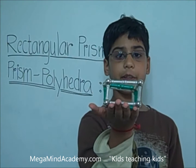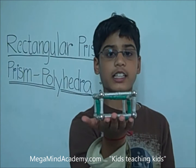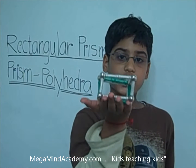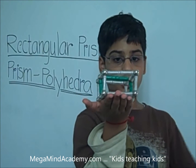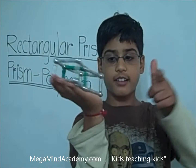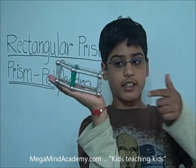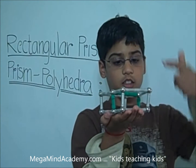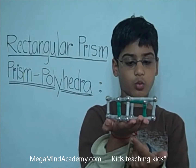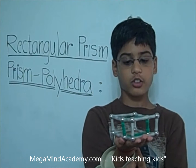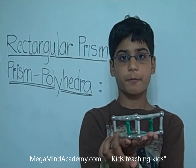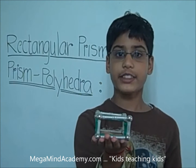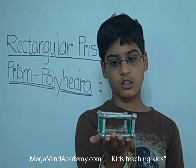Now let's see how many faces, edges, and vertices are on a rectangular prism. First, let's see how many faces there are. One on this end, one on this end, and four all around the sides — one, two, one on the bottom which is three, and four. So it has four all around. That makes it have six faces in total.